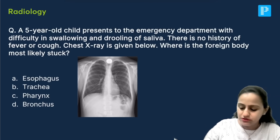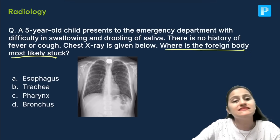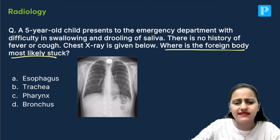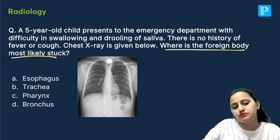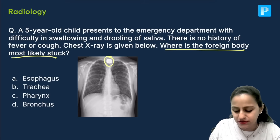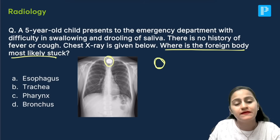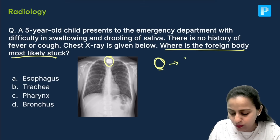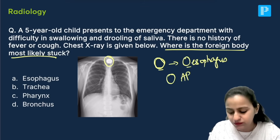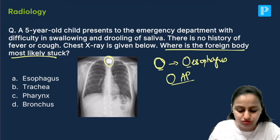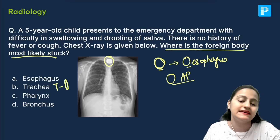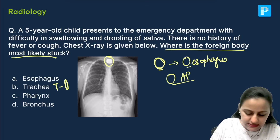The next question asks where is the foreign body most likely stuck. Whenever you have lengthy clinical questions, read the last line first — it gives you the crux. The options are esophagus, trachea, pharynx, or bronchus. On this frontal AP radiograph, the foreign body appears circular, and we use the trick: circle is O, O for esophagus. If the foreign body is circular in the AP view, it is in the esophagus. If it were in the trachea — T for trachea — the foreign body would appear as a vertical slit-like line in the AP view. So the answer is esophagus.